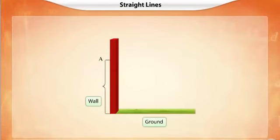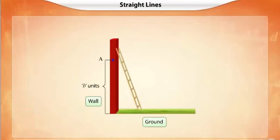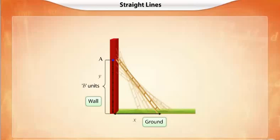A painter has to paint the wall at a height of B units from the ground. He can randomly place the ladder at different positions and check which position works for him. Observe that as he moves the ladder closer to the wall, the height at which the ladder touches the wall increases. The vertical position of the ladder depends on the horizontal position.